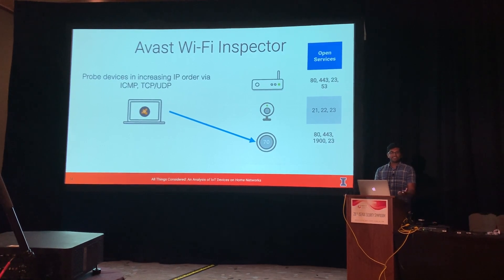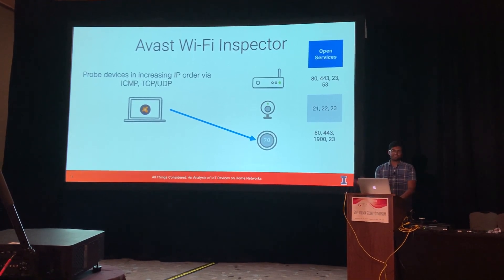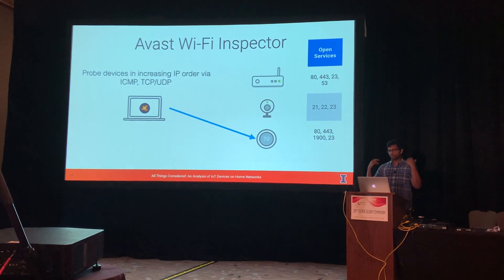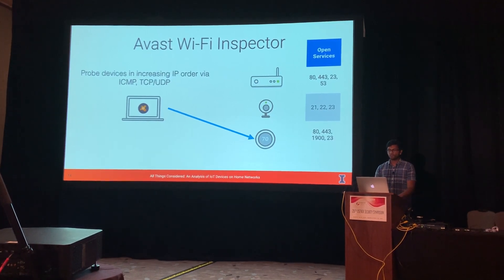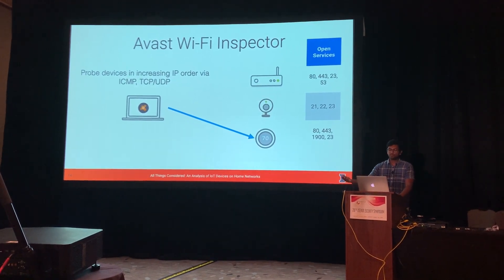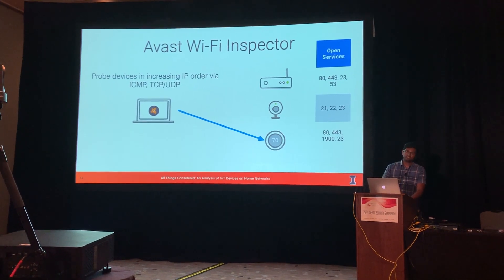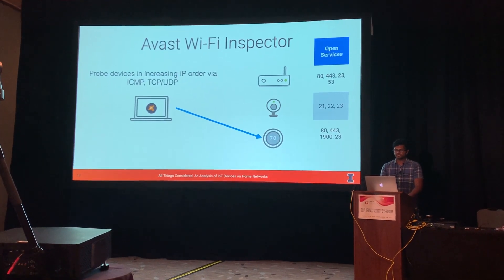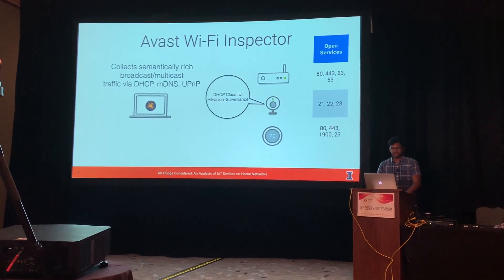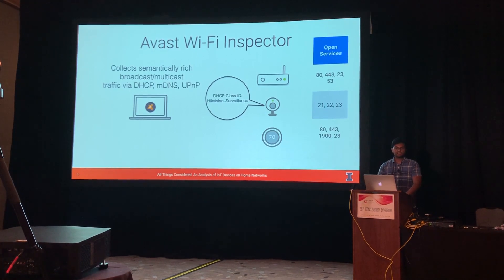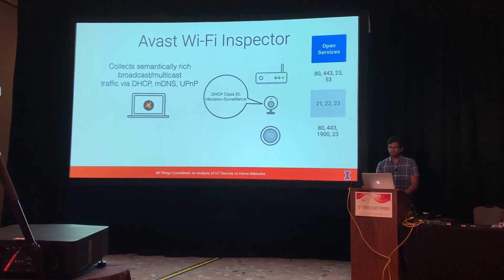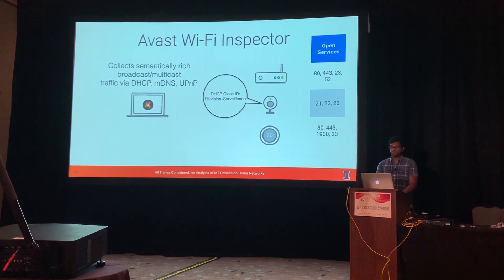Wi-Fi Inspector then uses this information to collect application layer data about each device. For example, if port 80 or port 443 is open, Wi-Fi Inspector will make an HTTP request to the root page of the device and collect and store that information. It also collects semantically rich broadcast and multicast traffic via protocols like DHCP, mDNS, and UPnP on the network.